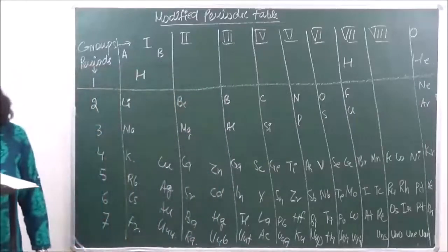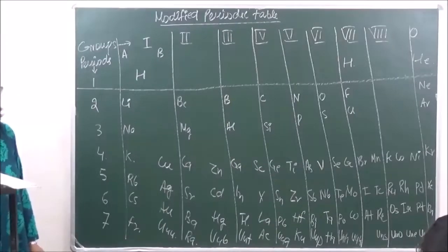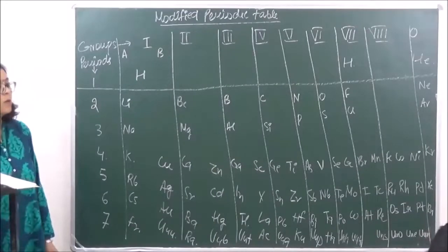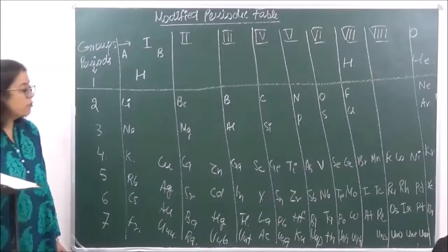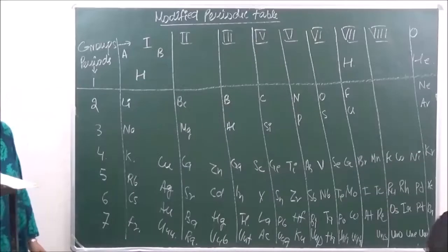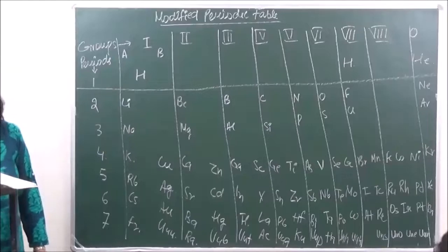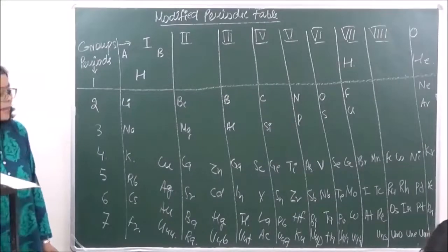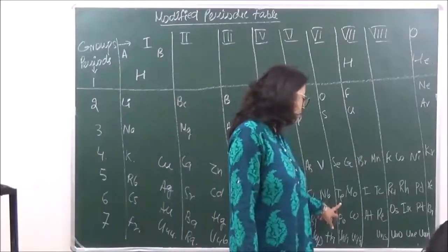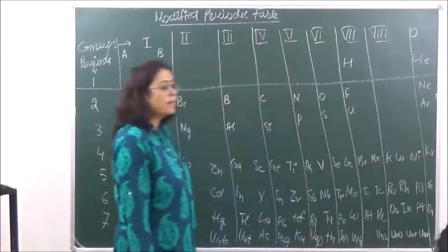The third anomalous pair was tellurium and iodine. The atomic mass of tellurium was 127.5 whereas that of iodine was 127, yet tellurium was placed before iodine. But when atomic numbers were taken, the atomic number of tellurium is 52 and that of iodine is 53, so tellurium is correctly placed before iodine in the periodic table on the basis of atomic numbers.